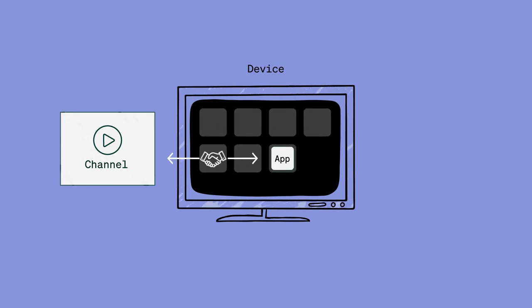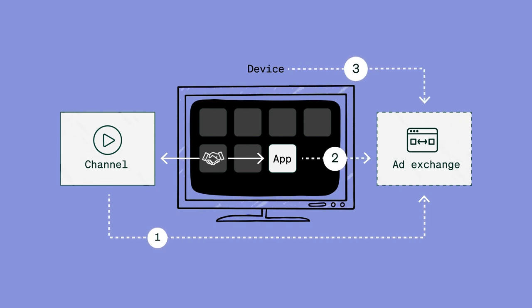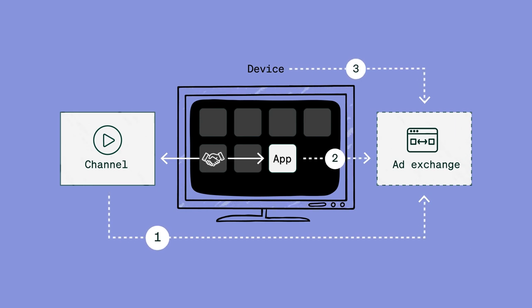For example, a media owner may have an agreement to distribute their content through a device or connected TV manufacturer's fast app, who also has rights to sell a percentage of ad inventory. While not as common, there are cases of three-way inventory agreements where a content owner, fast app owner, and device manufacturer all have rights to sell their respective share of the inventory.